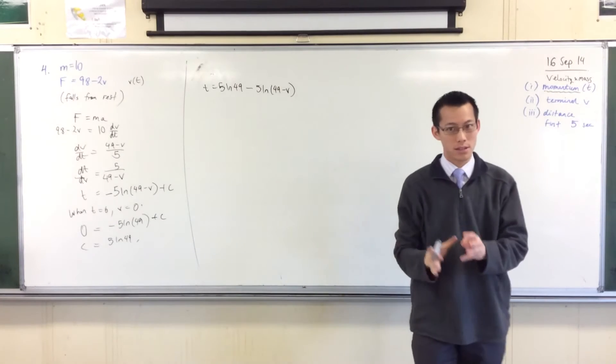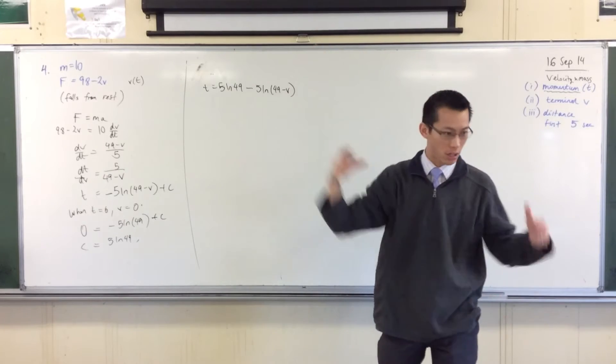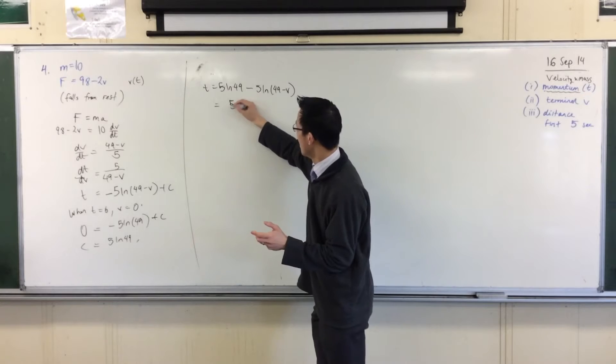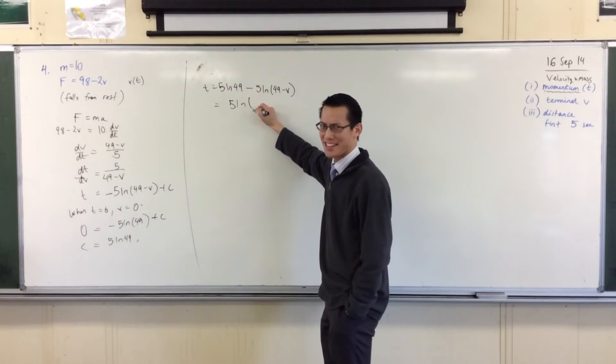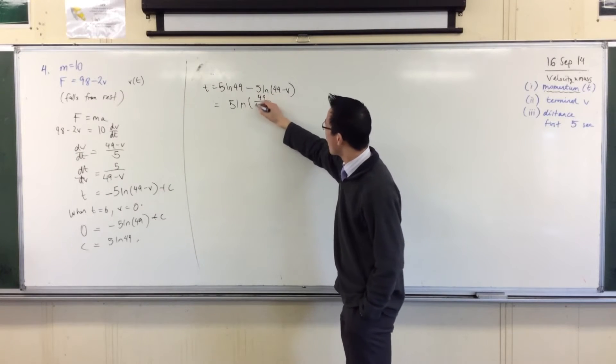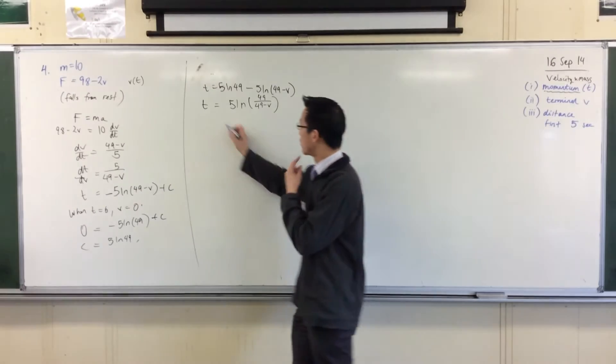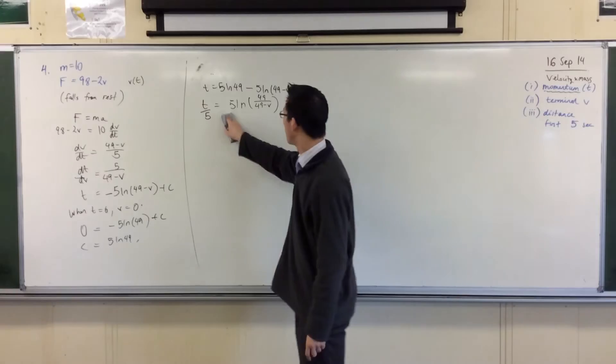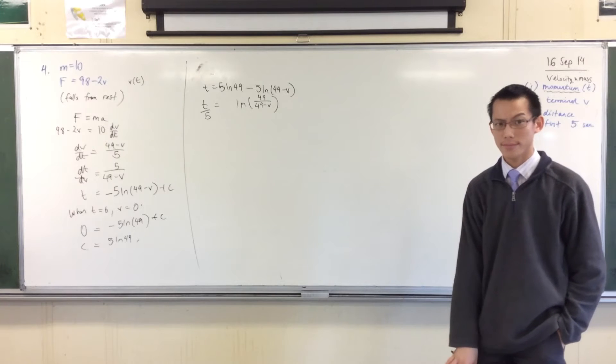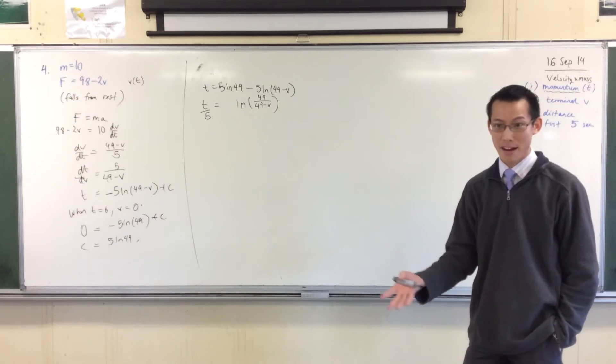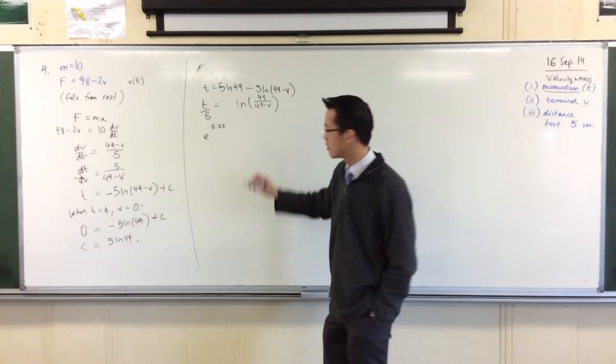So I'm getting there, slowly making progress. I need to get to a velocity equation. So I don't want time as a subject. What should I do? I should combine the logs, right? I think that's what that hand gesture meant. So 49 over, I'm hoping that's what the hand gesture meant, I've got 49 over 49 minus v, yes? Thumbs up. That's equal to time. I'll divide by 5 so that I just have the log over there. Now what? Rephrase it, rephrase it, exponential equation. E to the, I'll write that as 0.2t, so I don't have to worry about the fraction. Equals this.